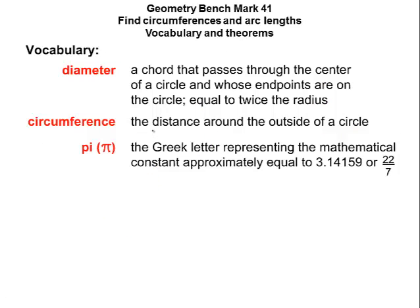Diameter is the chord that passes through the center of the circle. The circumference is the distance around the outside of the circle — basically the perimeter of a circle. Pi is approximately 3.14159, but we generally just use 3.14. Pi is probably one of the most famous mathematical constants because even non-math people know pi.